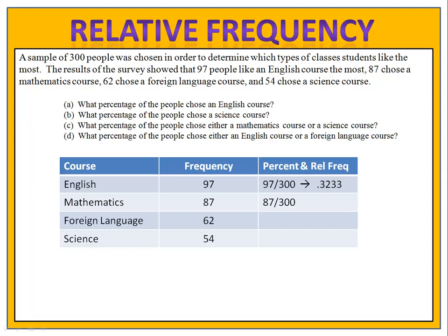For mathematics, we have 87 out of 300. 87 divided by 300 is 0.29, so roughly 29% of the people surveyed chose mathematics. We can do the same thing for foreign language and for science.